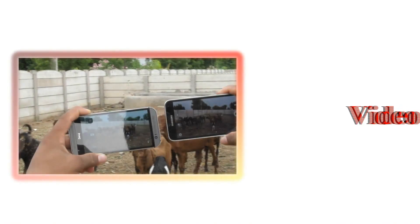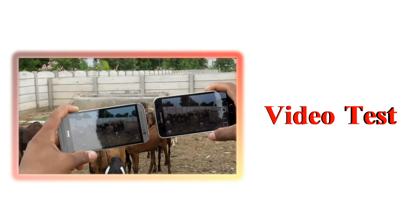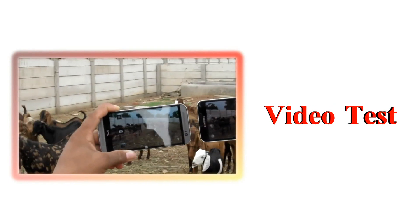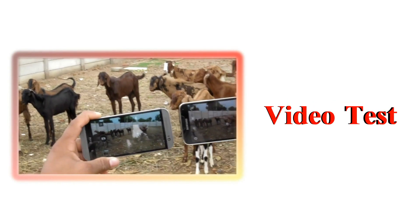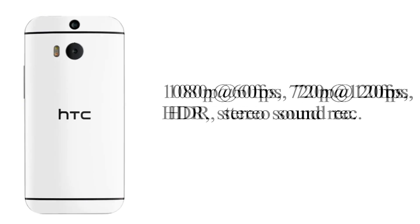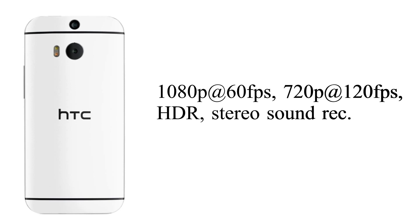Let's go ahead and take a look at some video samples of the HTC One M8 and S5. Before that, let's look at the video specifications of both cameras. The Samsung Galaxy S5 can record video up to 4K at 30fps, 1080p at 60fps, and 720p at 120fps. The same goes for the HTC One M8.